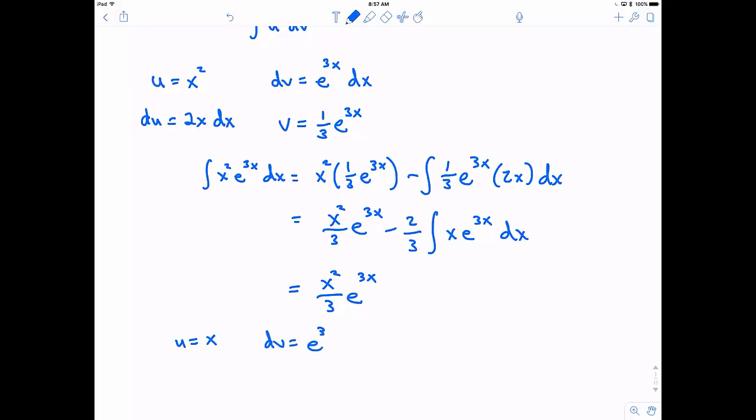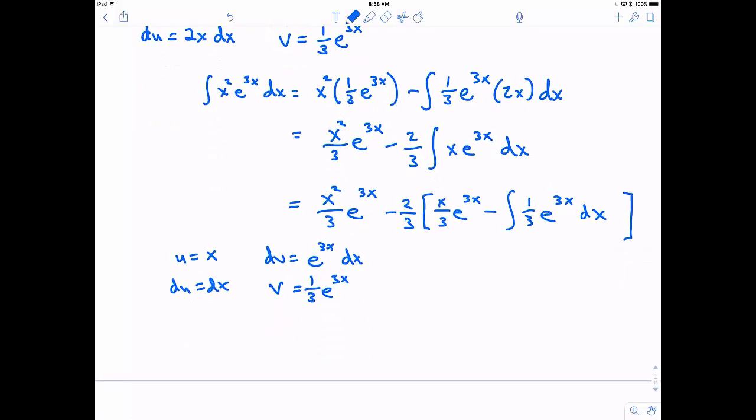Again, u being the power of x is a good choice usually. So, dv is going to be my e to the 3x dx. Du is dx and v is 1 third e to the 3x. So, then minus 2 thirds. And now, this integral according to integration by parts is supposed to be my uv. So, in this case, it's going to be x times 1 third e to the 3x. So, I can just write this x over 3 times e to the 3x minus the integral of v du. So, v is 1 third e to the 3x and du is just dx now. And this is an integral that I can actually calculate out.